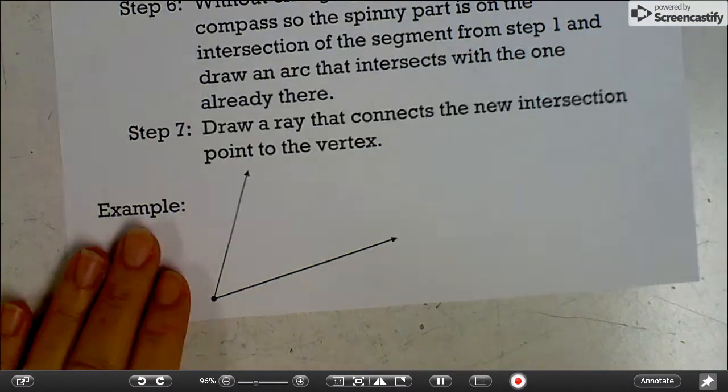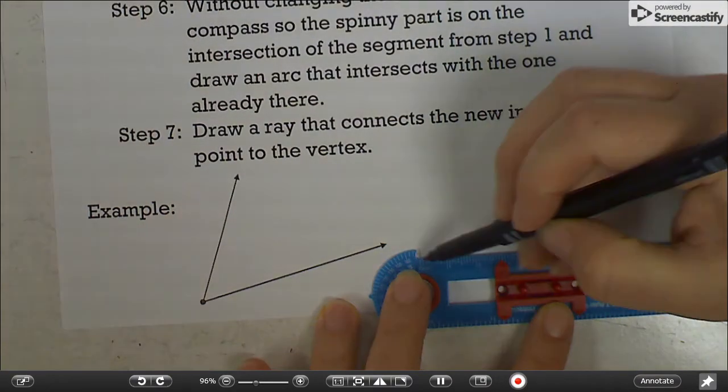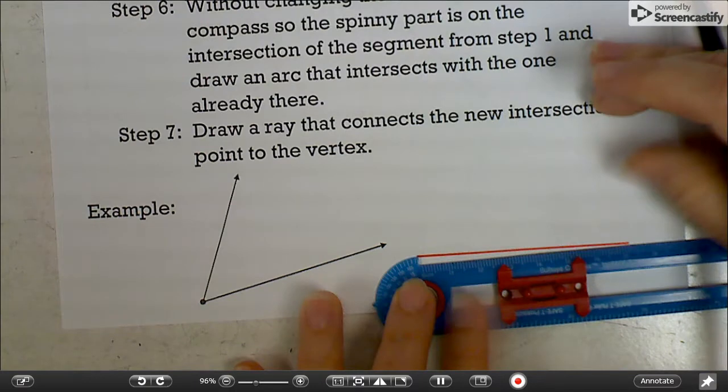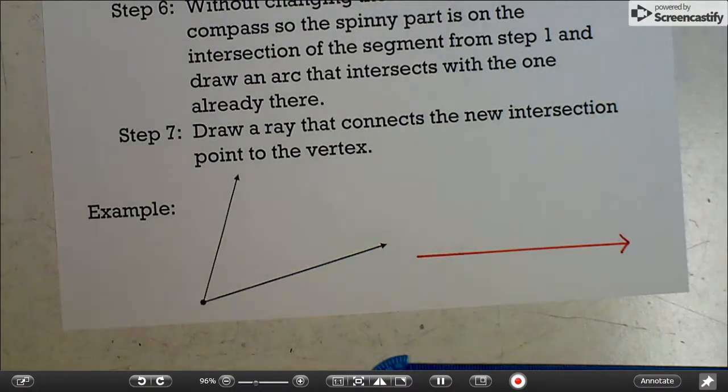The first step, and I always forget to do this first, but you still need to do it first, is to draw the bottom ray of your new segment. I don't care if you put the arrow on the end. I will just because I should be technical, I guess.